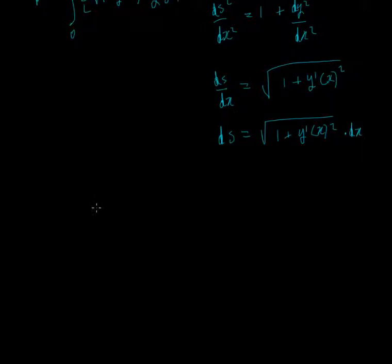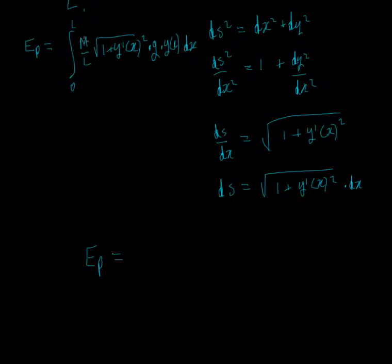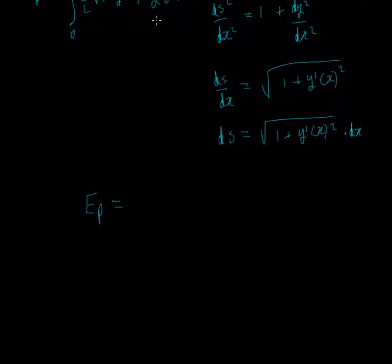So I'll just write that once more down here. Also note that these values here, m and L and g, these are constants, fixed numbers dependent on the system. So g is a fixed number, m and L are fixed dependent on the mass of the rope and the length of the rope.